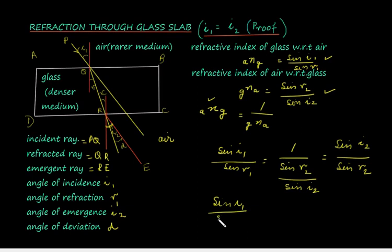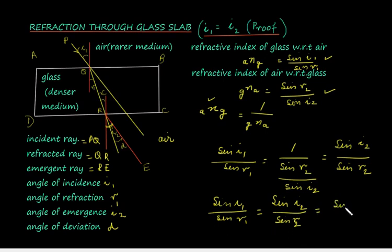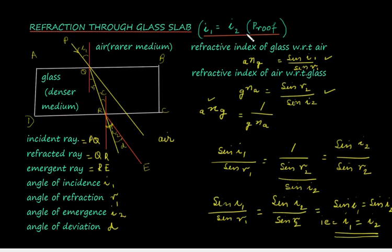From the geometry we understand that r1 is equal to r2, so we can write sin(i1) equals sin(i2), which gives us i1 equals i2. We have proved that i1 equals i2 — that is, the angle of incidence is equal to the angle of emergence.